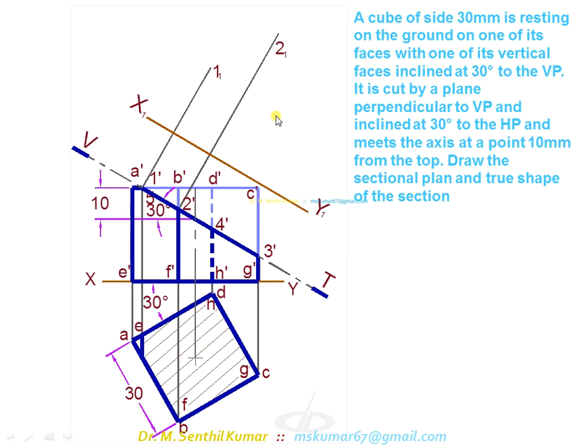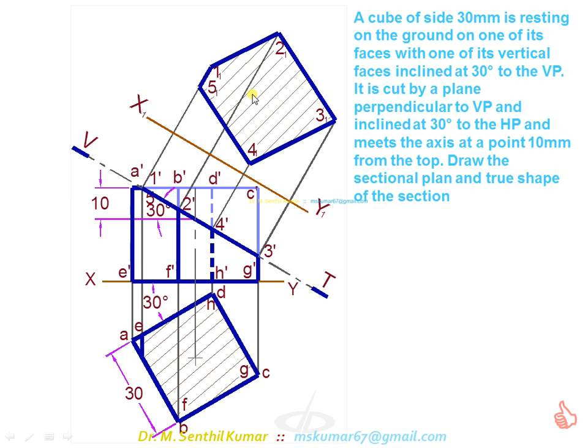Follow the similar procedure for 2, 3, 4, and 5. Join all these in proper sequence that completes the true shape of the section and hatch it. This is the answer. We'll do it. So let's go now.